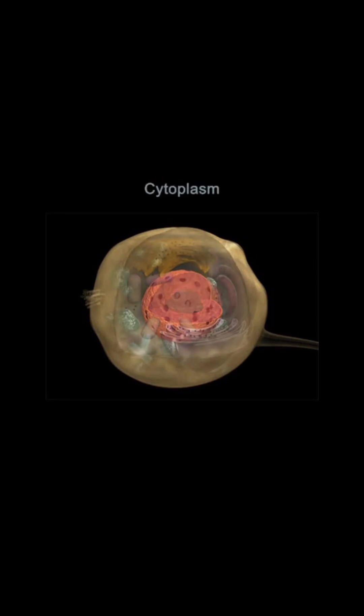The cytoplasm is a gel-like substance that contains numerous organelles. Among the organelles are ribosomes that synthesize proteins. Some ribosomes are attached to endoplasmic reticulum, and others move freely within the cytoplasm.